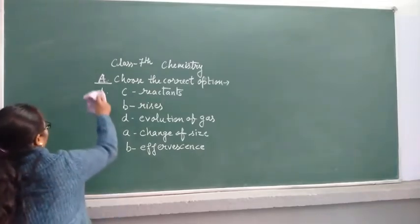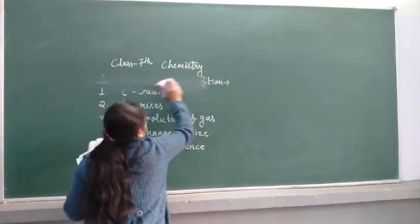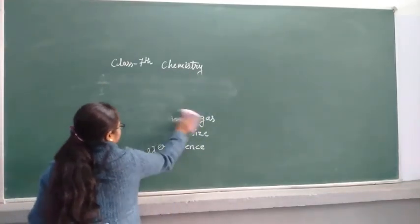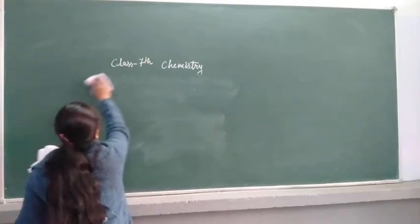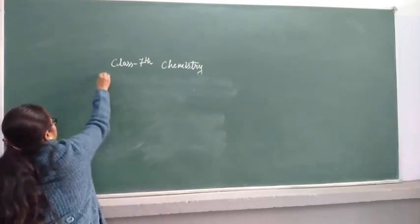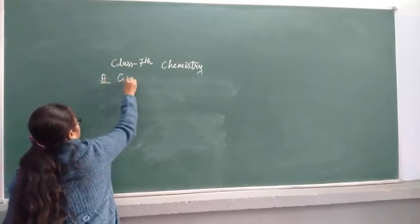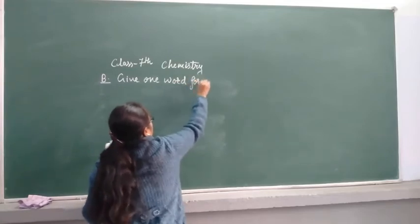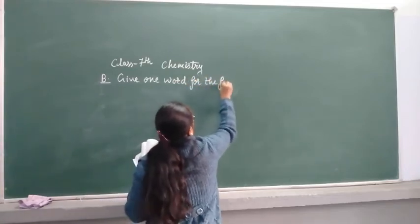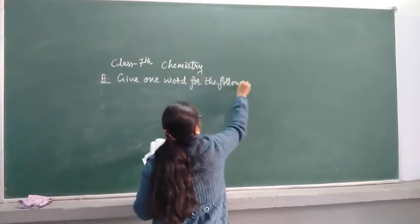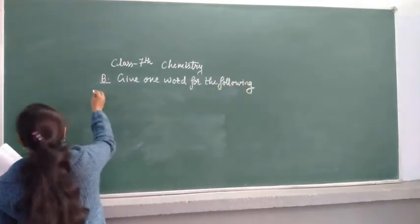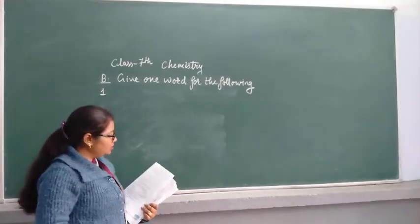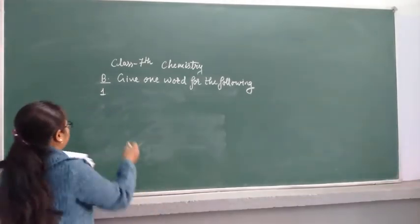Now your second question: Give one word for the following. First one: The substances formed during a chemical reaction. The answer is product.